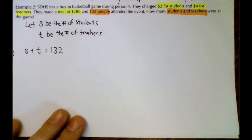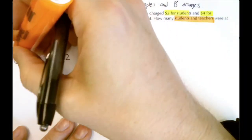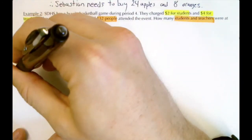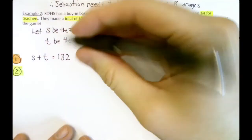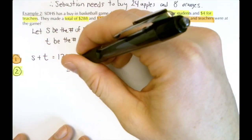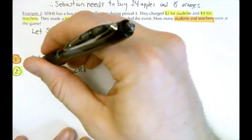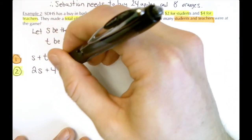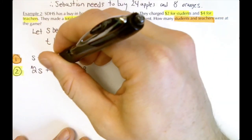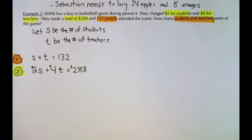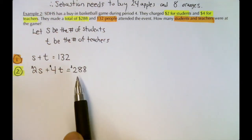The second equation is about money. The total amount made is $288, which came from $2 per student and $4 per teacher. So 2S + 4T = 288. Now we have our system: S + T = 132 for the number of people, and 2S + 4T = 288 for the money.